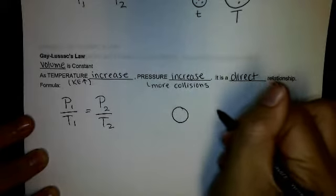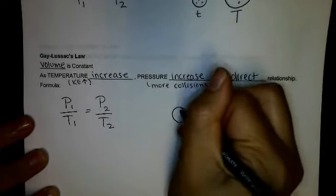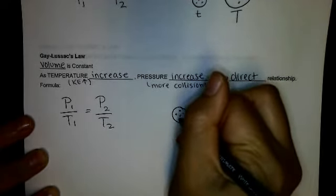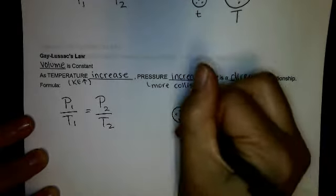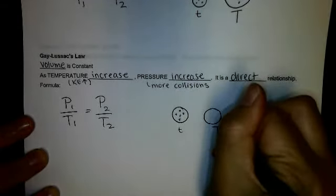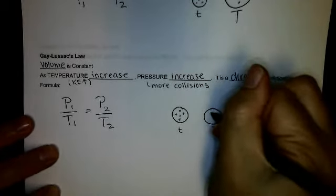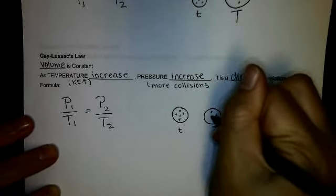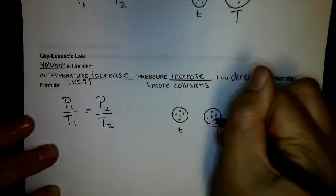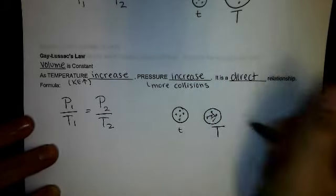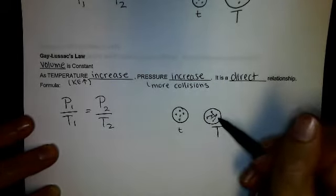So here I have a rigid container. I have my gas particles in it. And this time, I'm going from a small temperature to a high temperature. They're going to move around more at this higher temperature. They're going to have more collisions, and those more collisions are going to be a higher pressure.